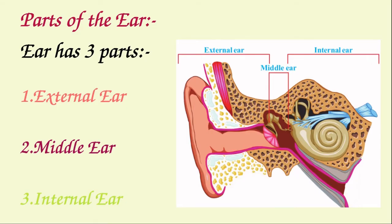Now we can see the structure. The ear has three main parts as you see in the picture. There is an external ear, then there is a middle part called the middle ear, and an internal part called the internal ear or inner ear. The inner ear is also called labyrinth. So the three parts of the ear are: the external ear, middle ear, and the inner ear.